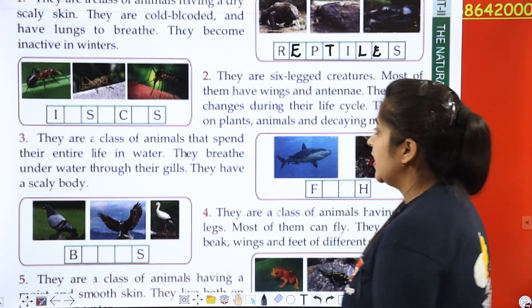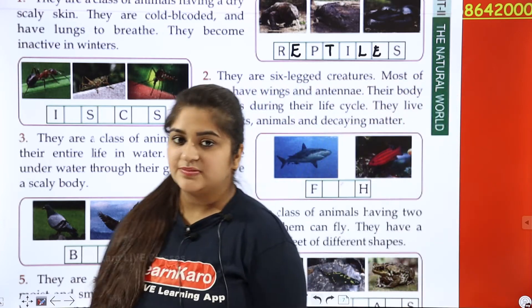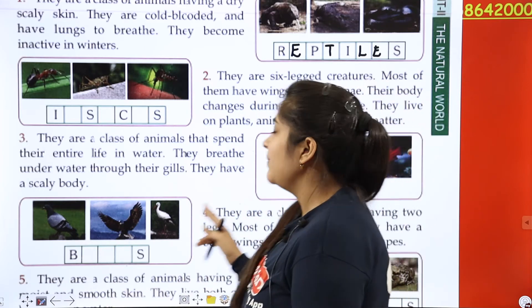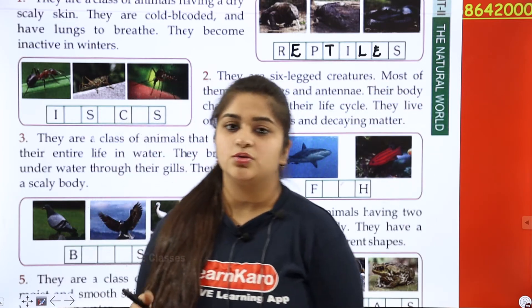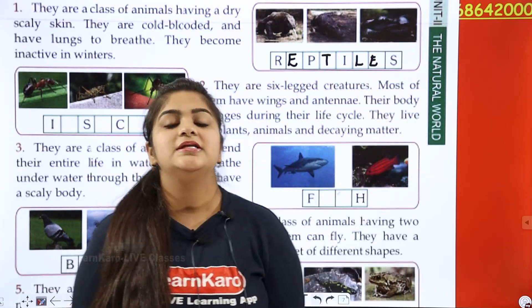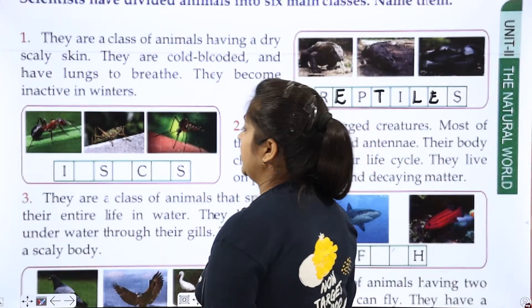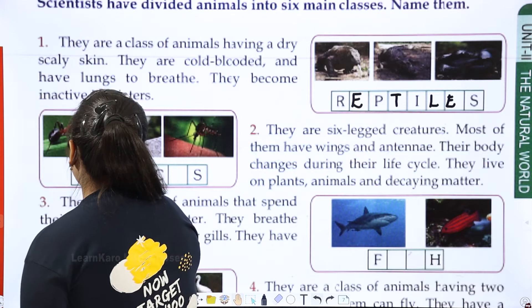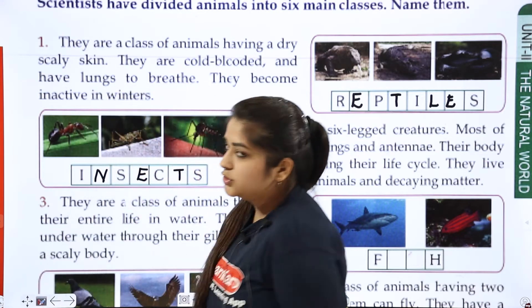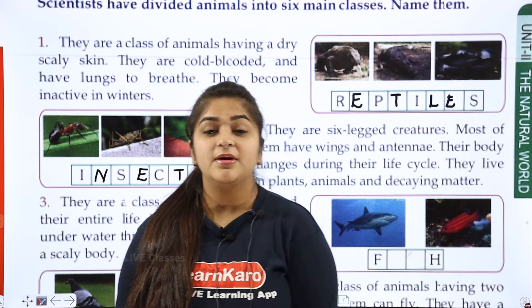These animals live on plants, animals, and decaying matter. These animals are known as insects. I-N-S-E-C-T-S.